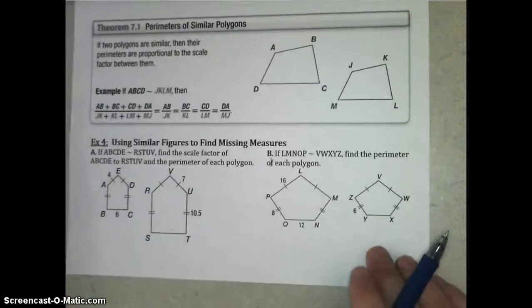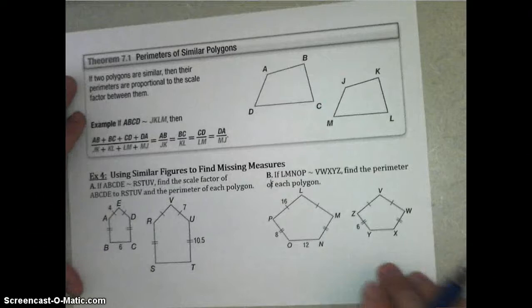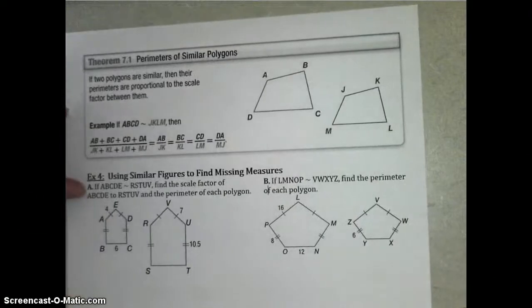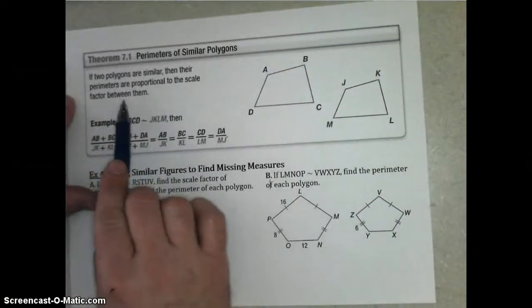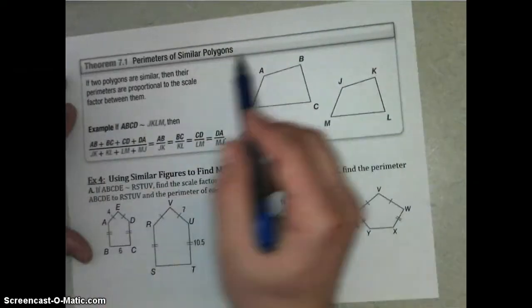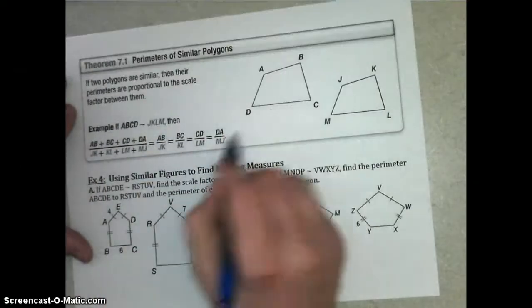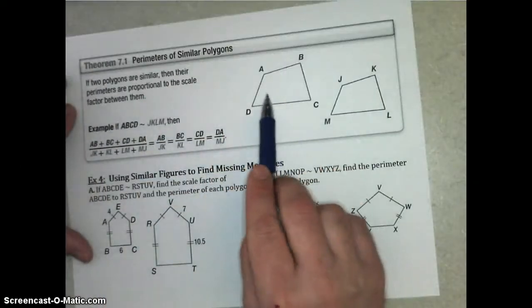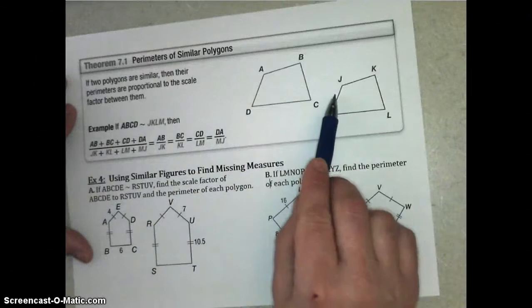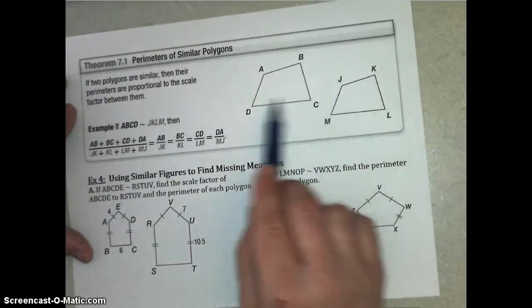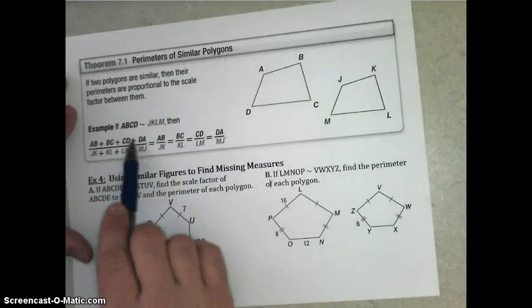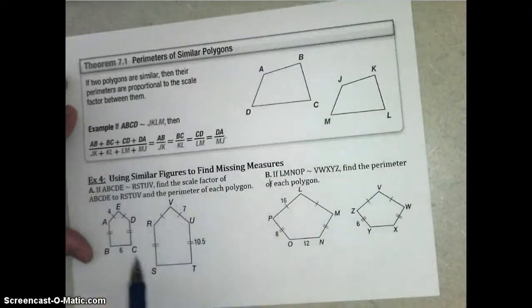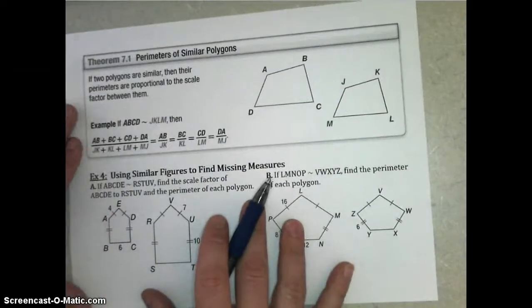That brings us to our final concept and idea and that is the perimeters of similar polygons. If two polygons are similar, then their perimeters are proportional to the scale factor between them. So, because perimeter is a length measurement, whatever ratio we have for one side to its corresponding side is going to be the same ratio as the sum of all four sides to the sum of the other four sides. So, the perimeter ratio is the same as your similarity ratio is all that really says.